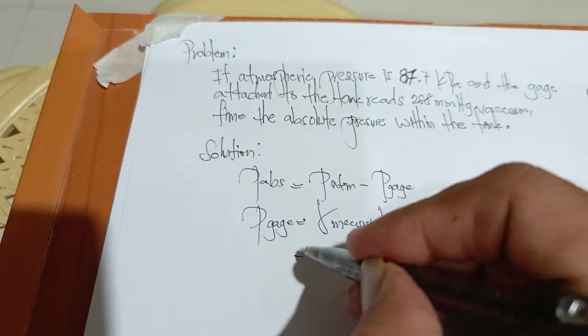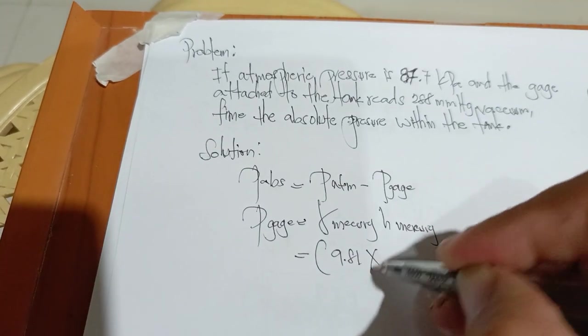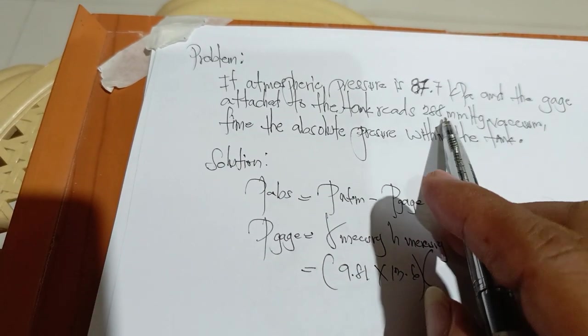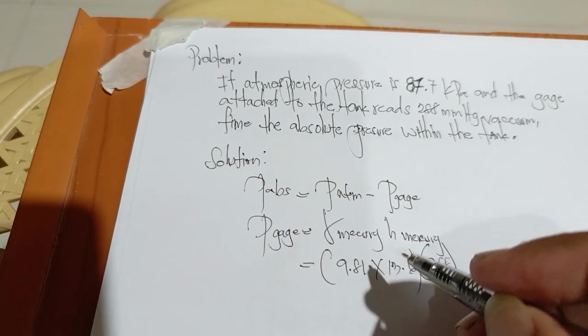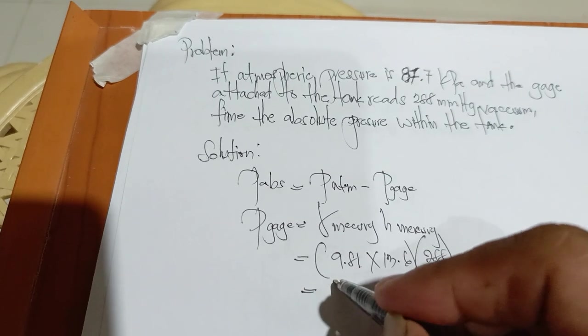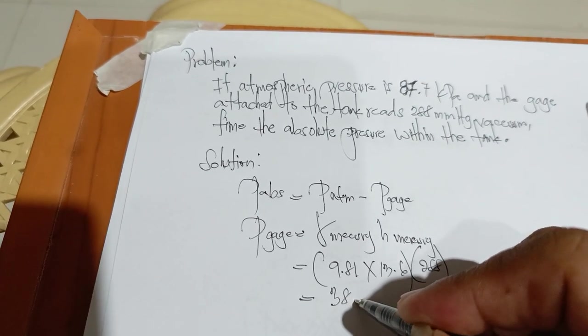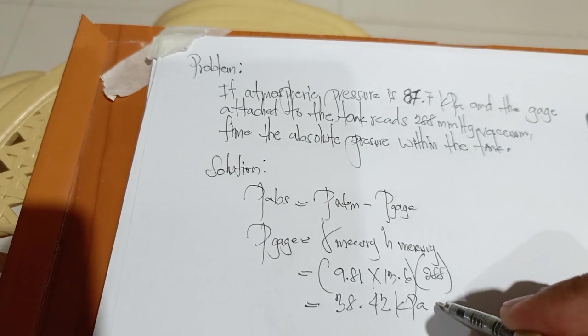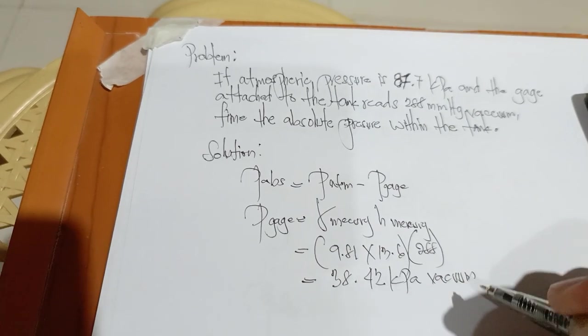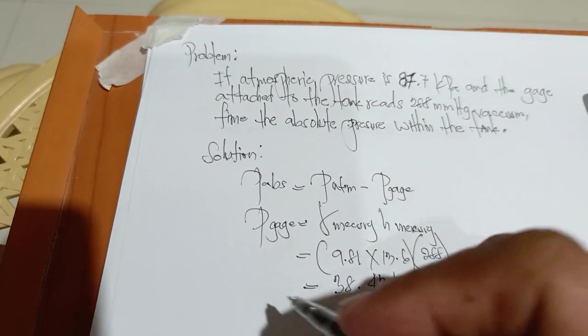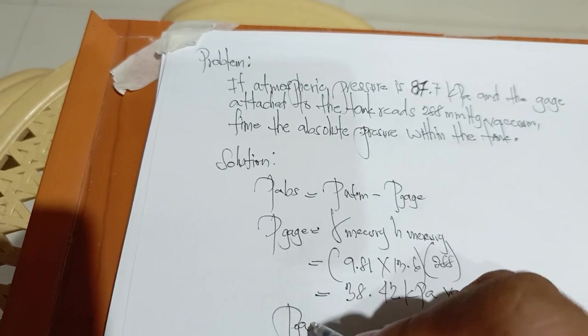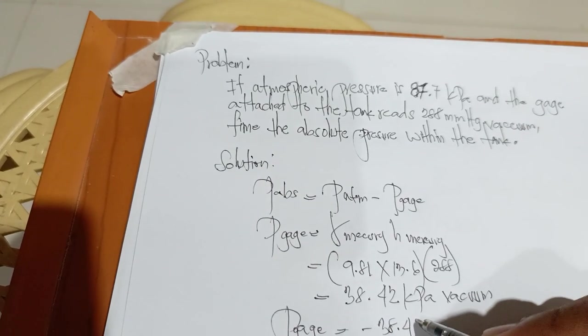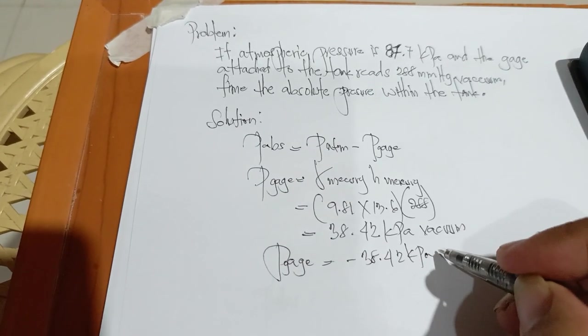This equals 9.81 times 13.6 times 288, which is equals 38.42 kilopascal vacuum, equals negative 38.42 kilopascal vacuum.